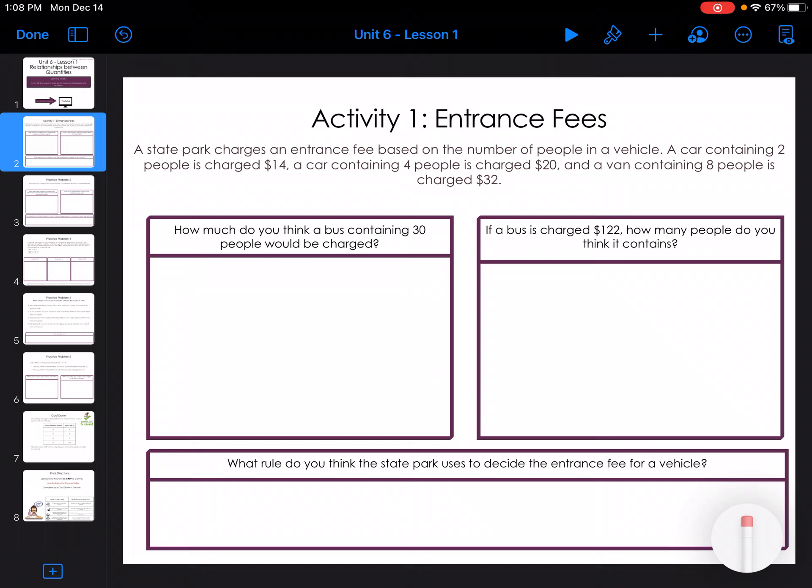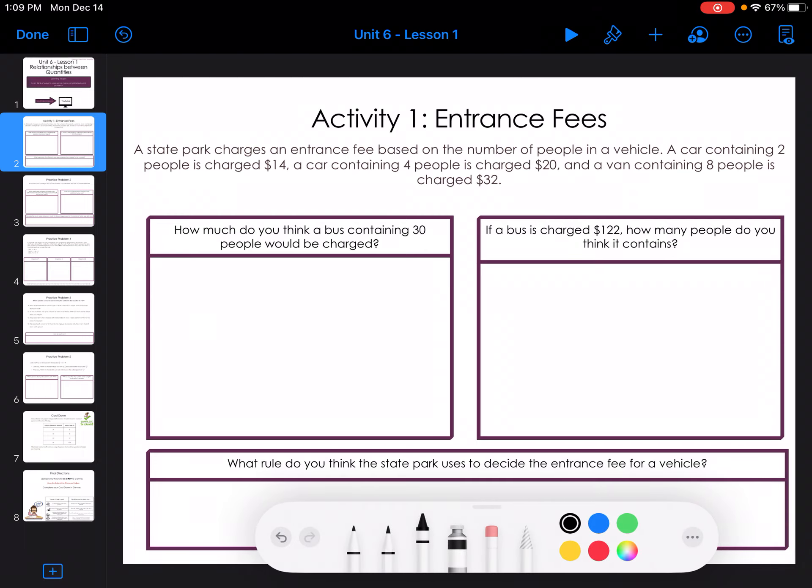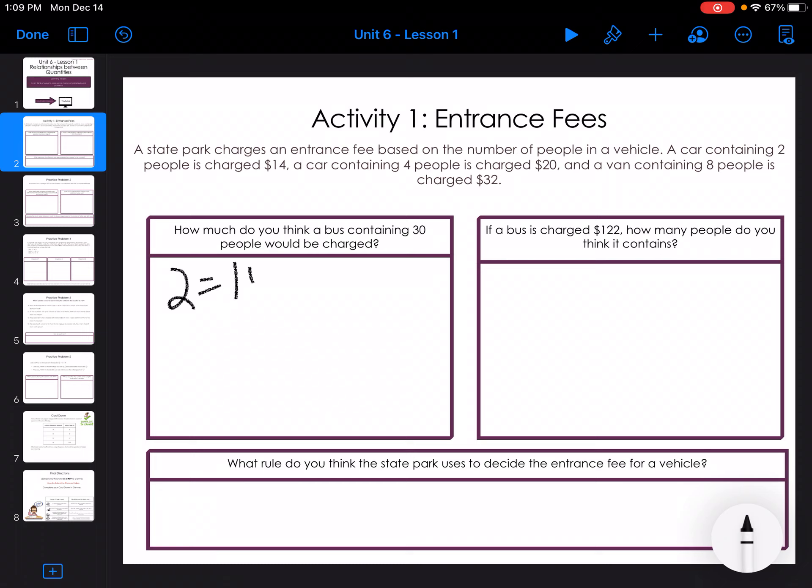So we've got a state park that charges an entrance fee based on the number of people in a vehicle. A car containing two people is charged $14. Four people is charged $20. Eight people is charged $32.